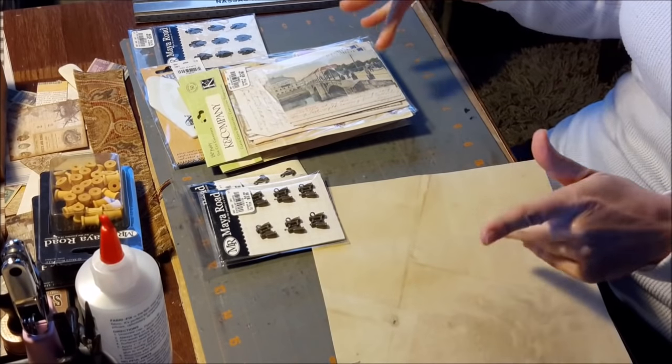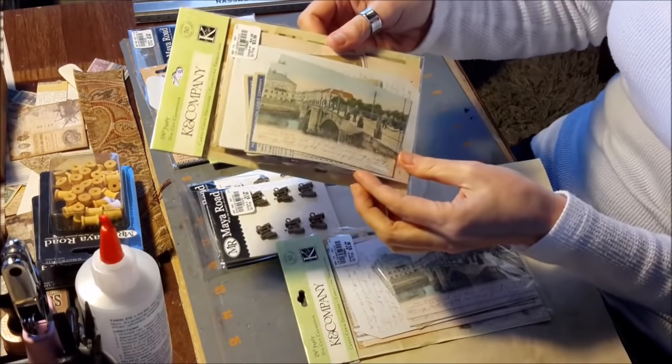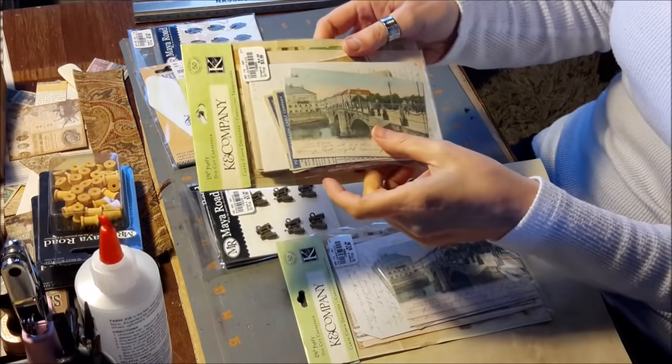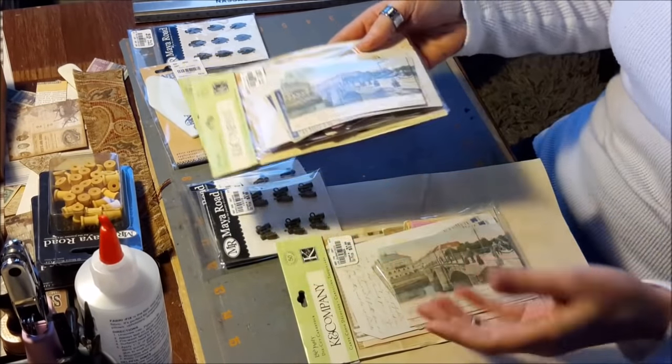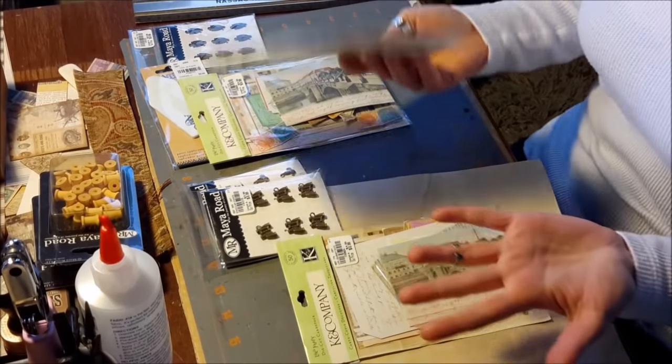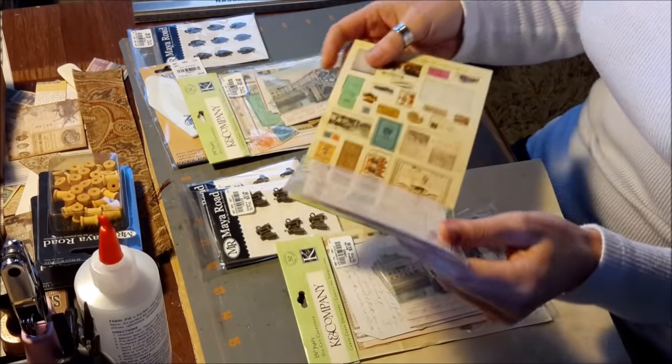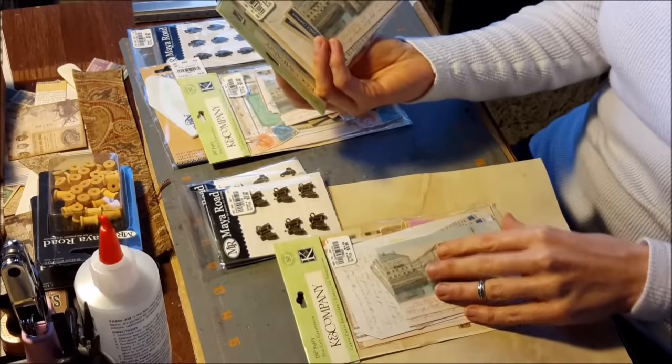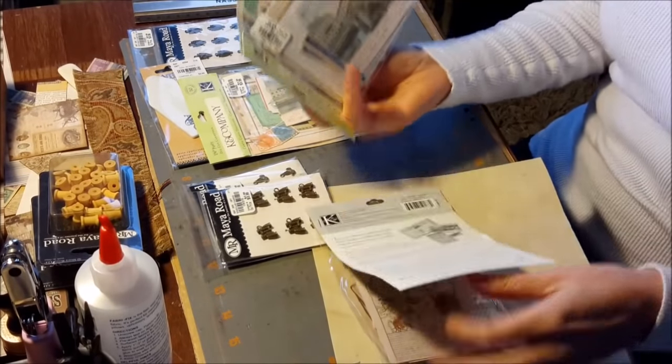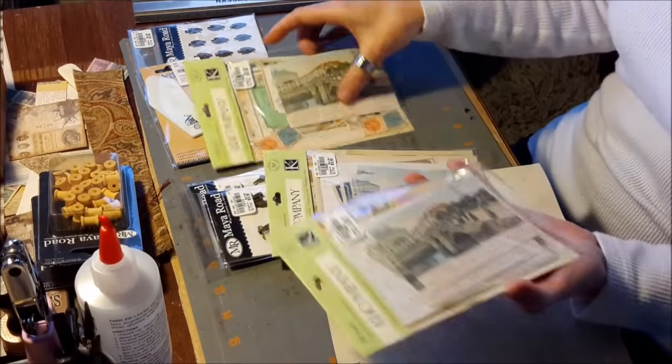This is what I got at Tuesday Morning. These are little K and Company die cut ephemera packs, and these were 99 cents. There were three of them, so I grabbed them all because I figured I could use them. I thought they were all different, but they're not. They're just packaged to where they look different, but they were 99 cents.